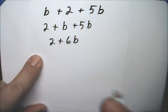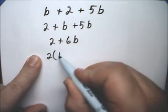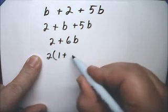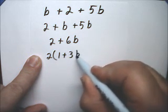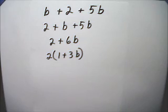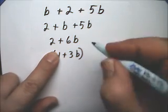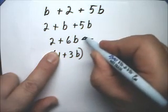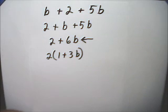2 goes into both. You could write this as 2 times 1 plus 3b. And that would be the same thing. But this is usually about as simple as we need it. This would be a factored form.